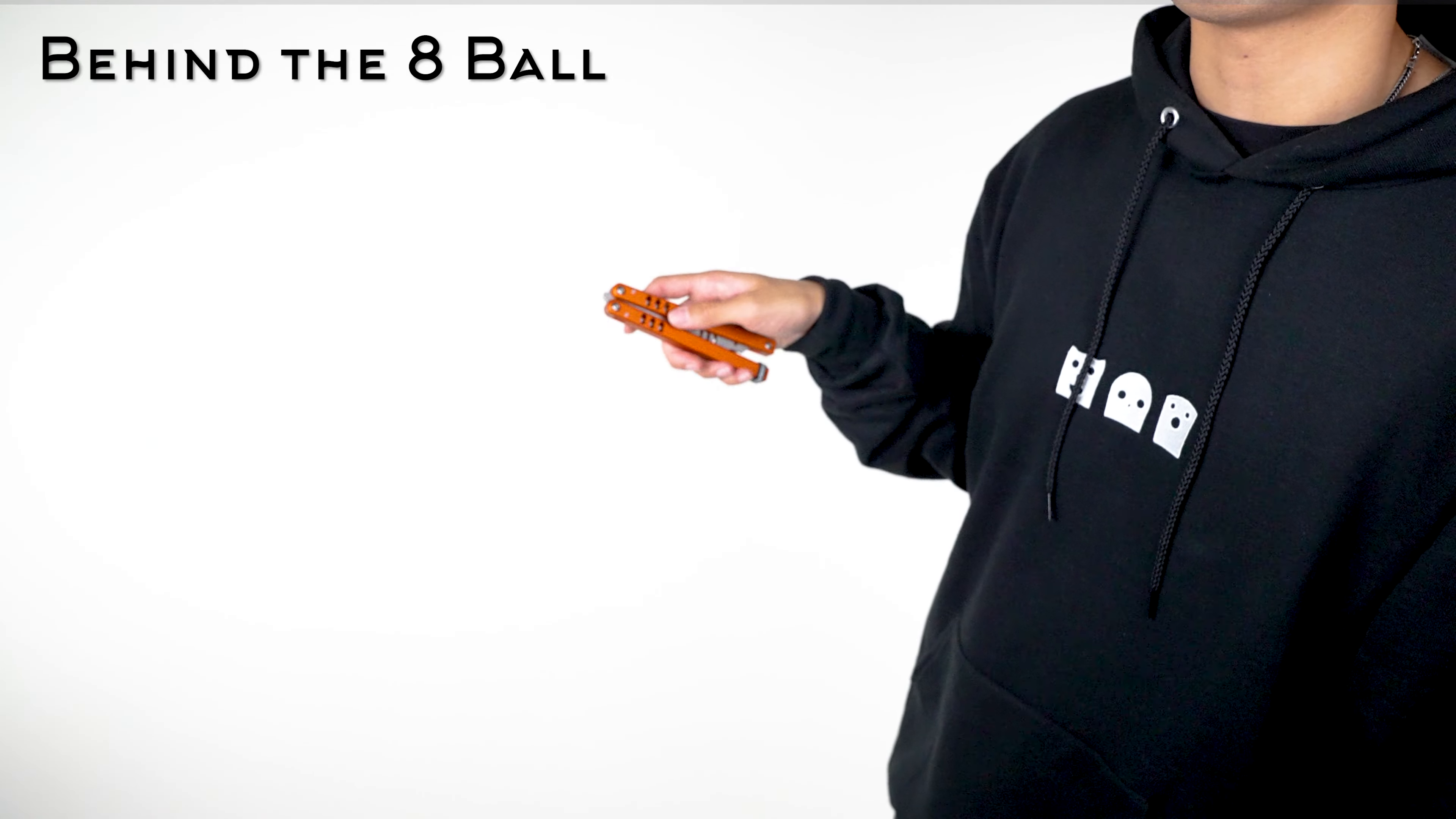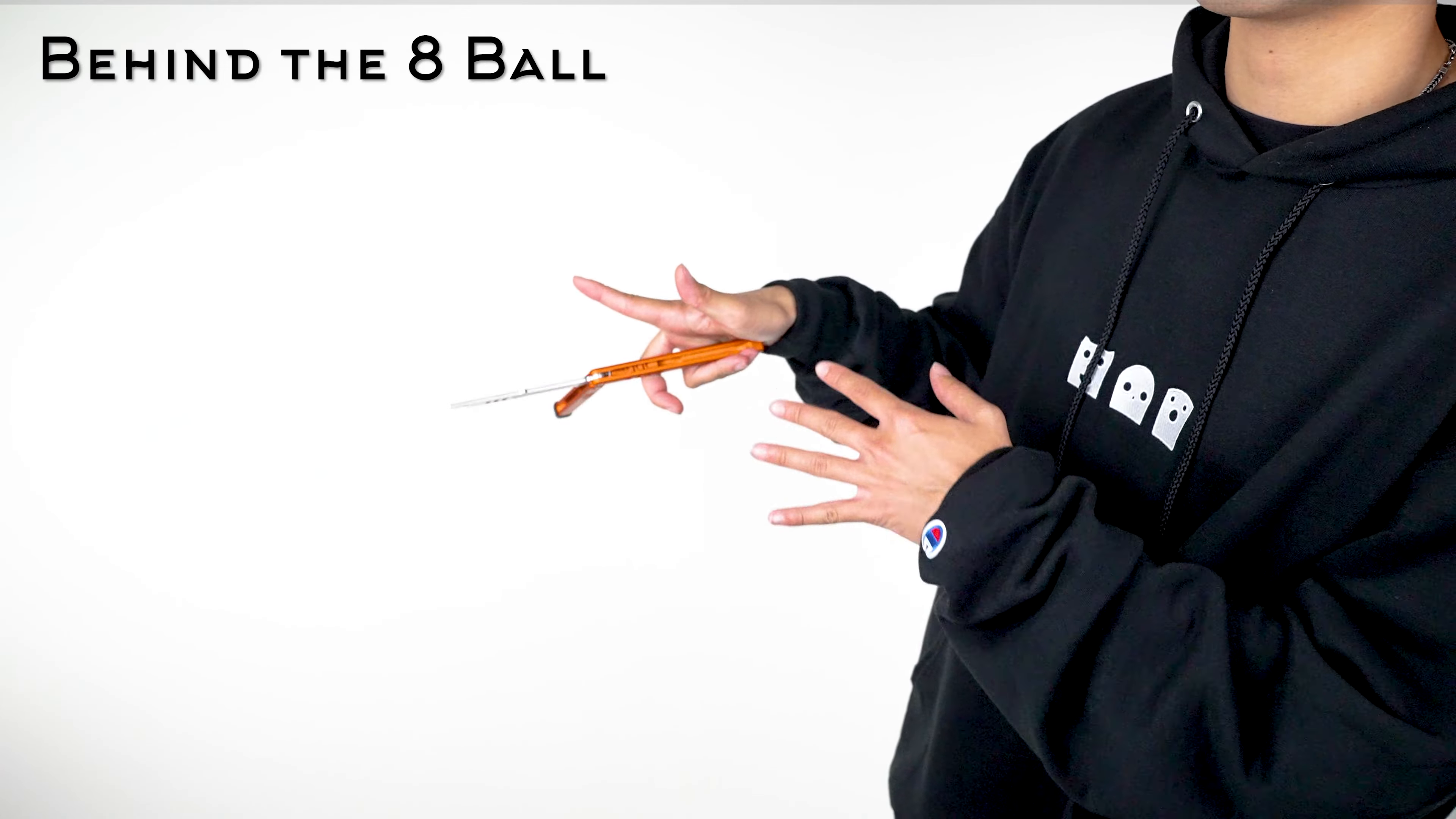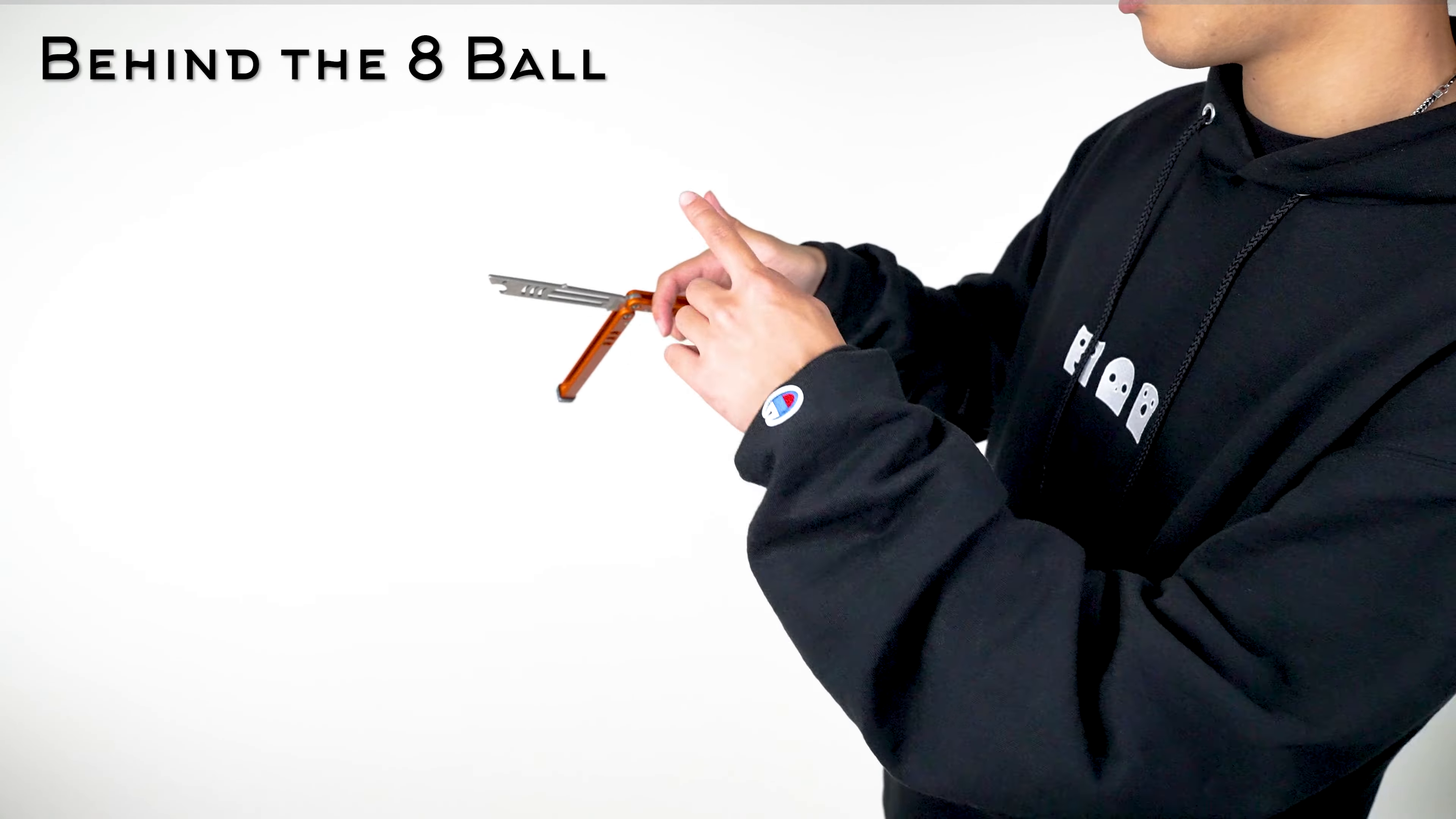So let's get to the breakdown of the behind the eight ball. To do the behind the eight ball you want to start by holding the safe handle and flicking out the bite handle and the blade horizontally like this and then your thumb and your index finger are gonna get out of the way when you do that.